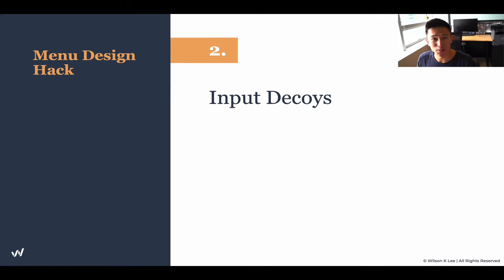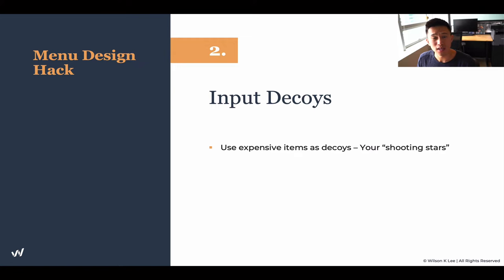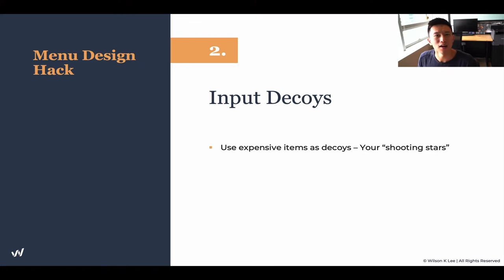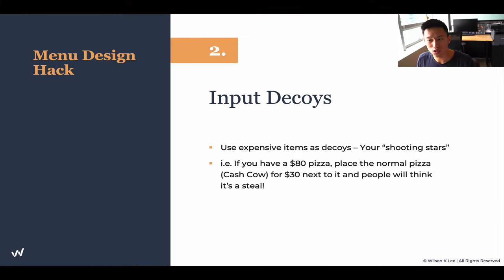Second is to input decoys. We talked about the shooting star in our previous lesson. Shooting stars are items not really meant to be selling — they're items not really meant for you to be profitable with either. For example, we have a $50 ice cream with gold flakes and caviar. Not many people are going to buy that. However, because we have this decoy on the menu, everything else in relation makes the other items much more affordable. That's exactly why you should have a decoy within your menu.